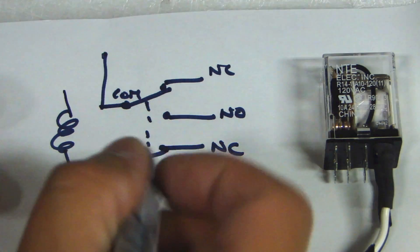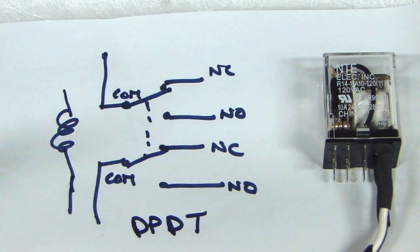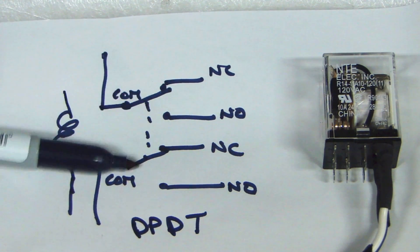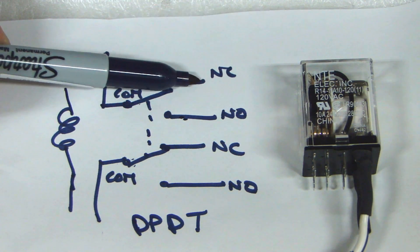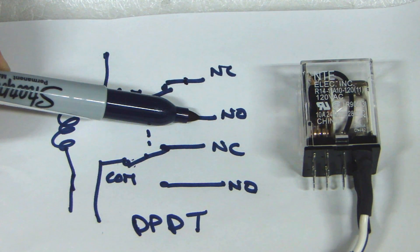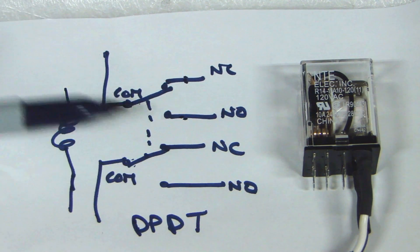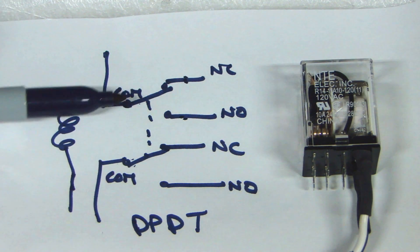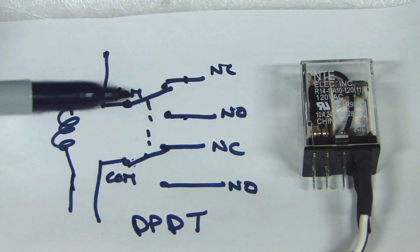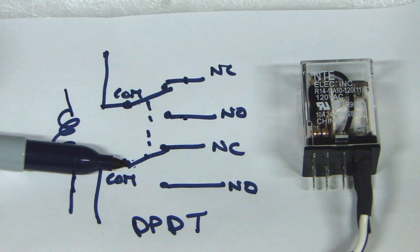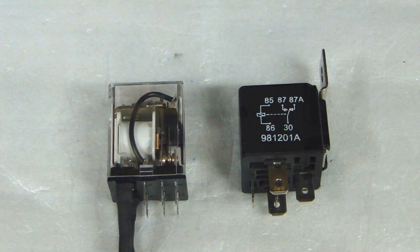So that's why they call this the double pole, double throw. Because we have two poles here for the contacts, and the double throw, the double represents the normally closed and normally open of each side. So these are your throws. Now keep in mind, these two are separate switches. They're not connected in any way. The only thing that's connected is the fact that when this coil energizes, it will switch both of these poles at the same time. But physically, inside the relay, these two sets of contacts are totally separate.